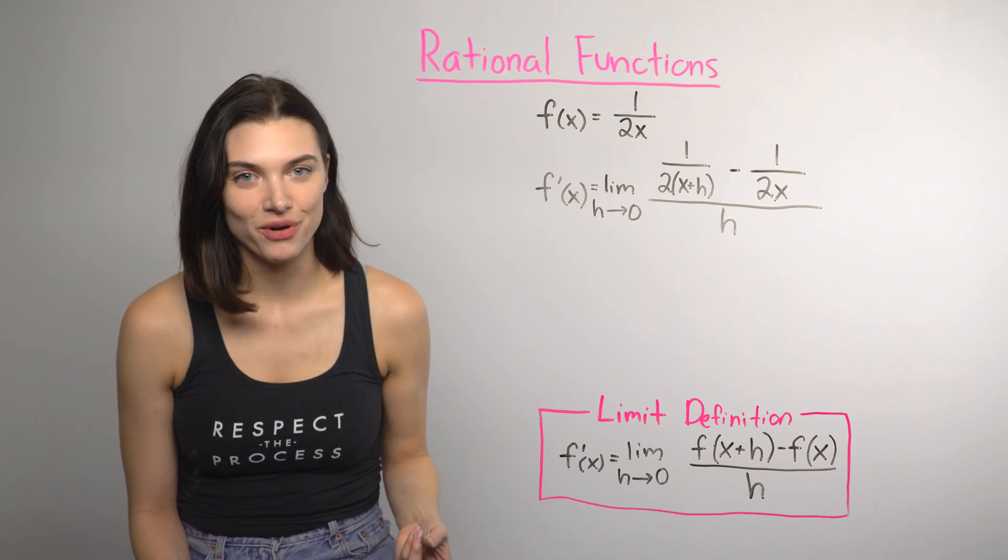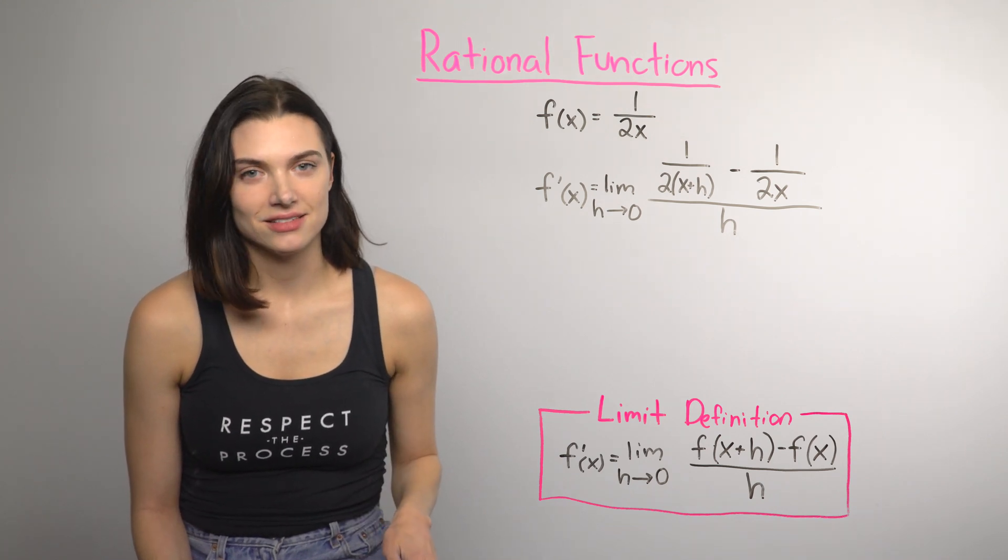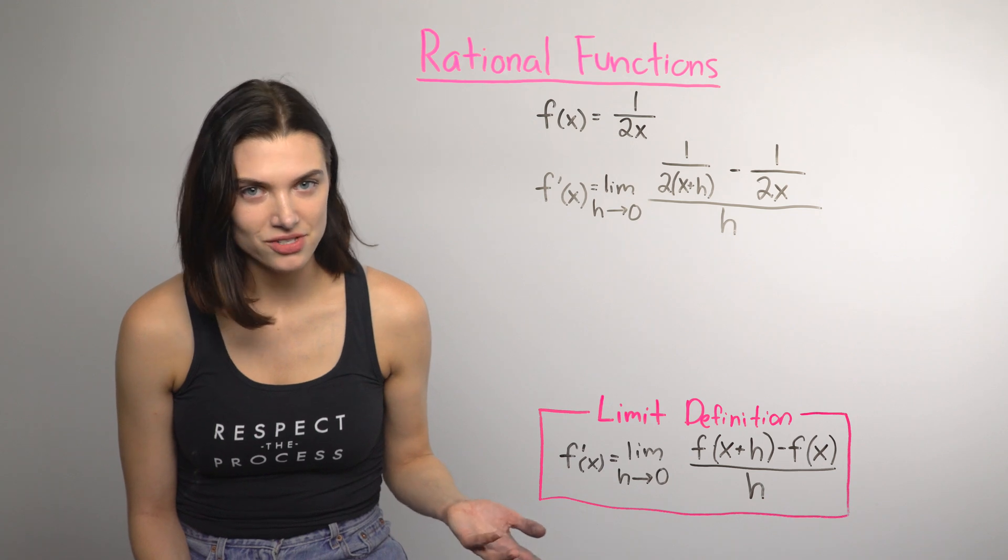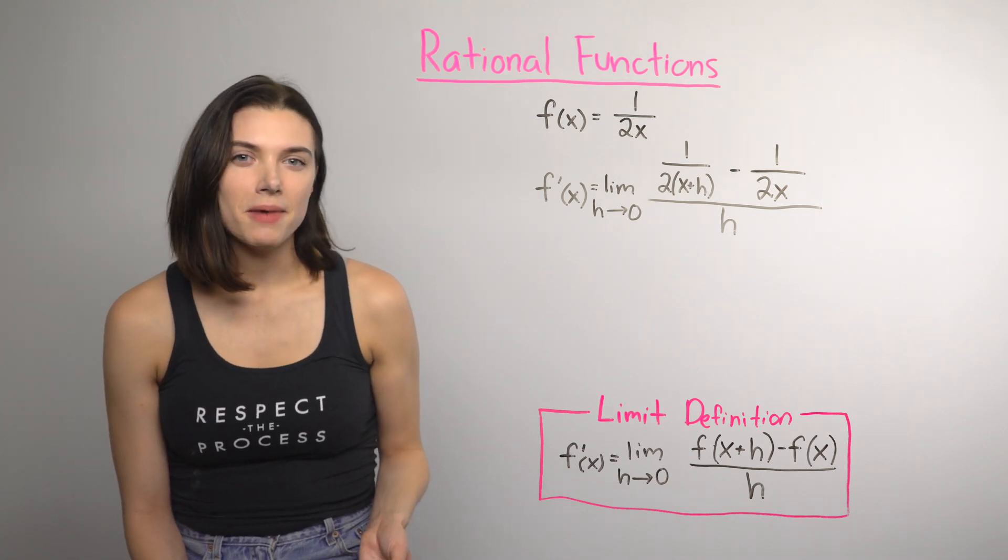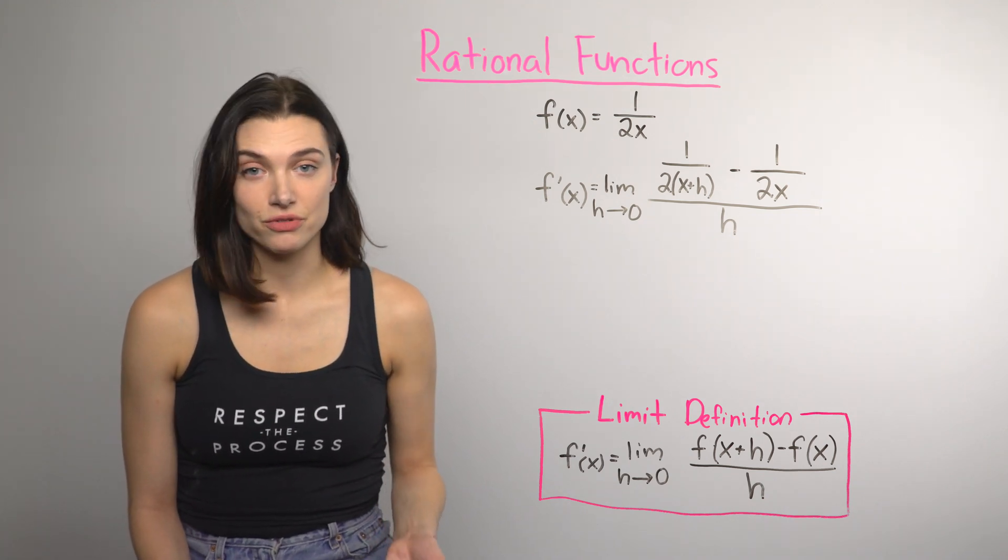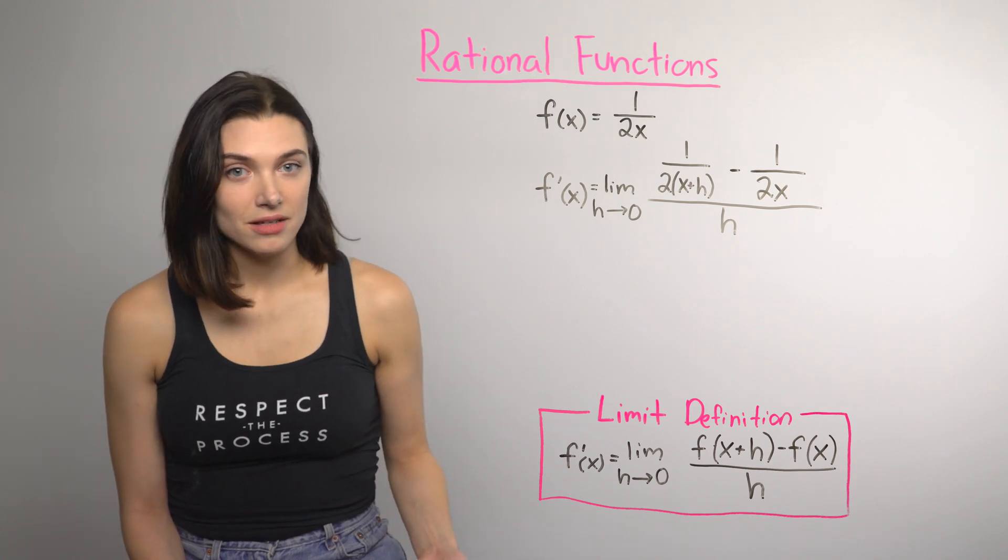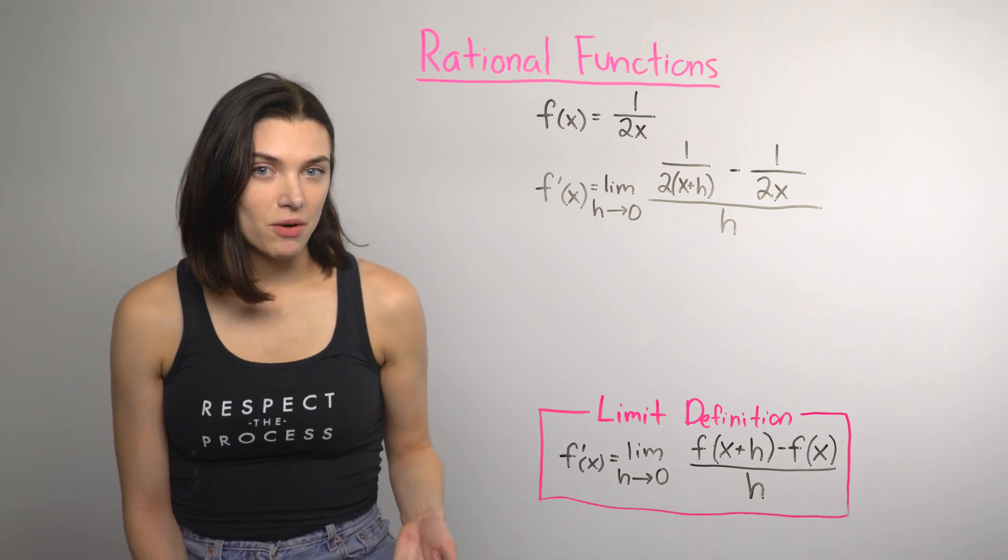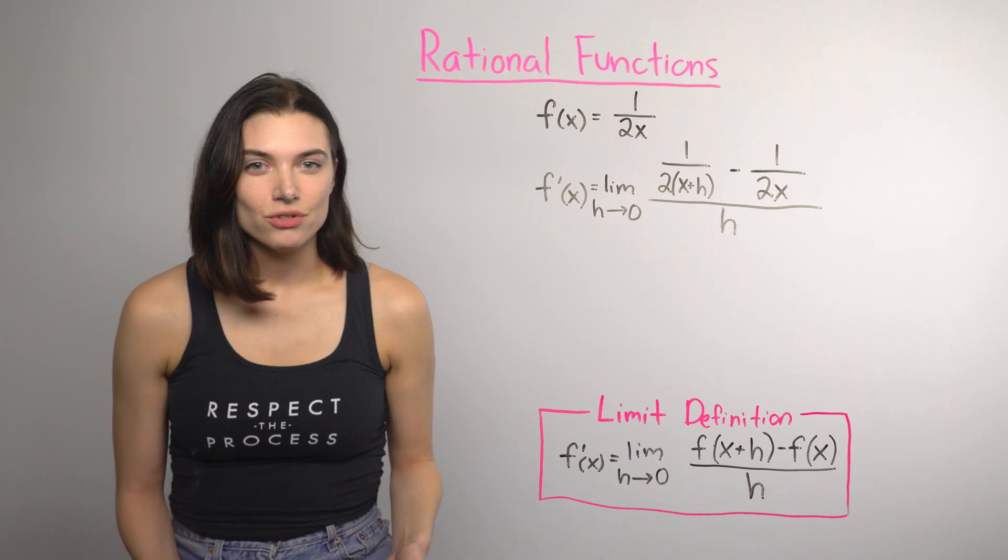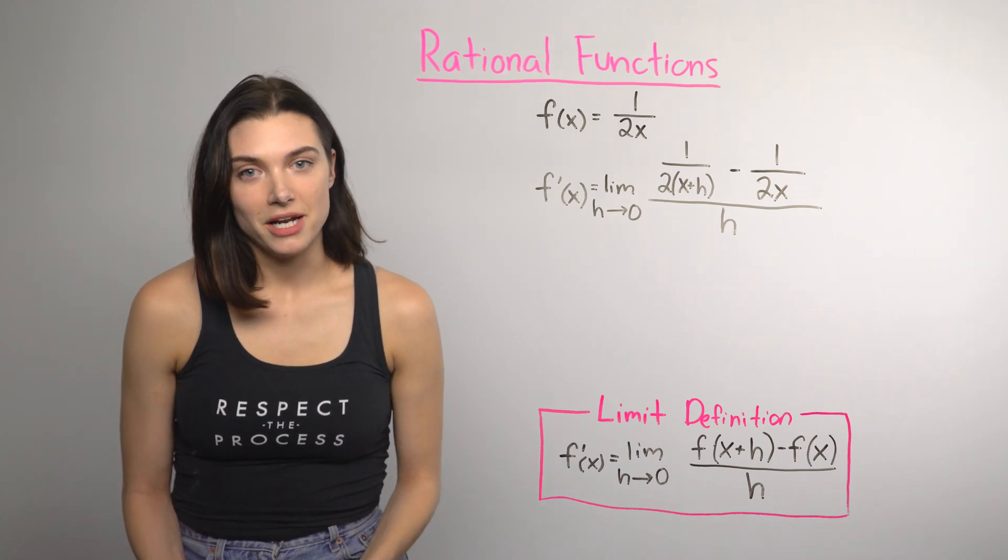There are two fractions in the numerator. I don't like that, and you probably don't like that, right? So, a good place to start might be to find a common denominator for those fractions. Because of how the limit definition works, if you start with a function with fractions, you're usually going to need to find a common denominator.